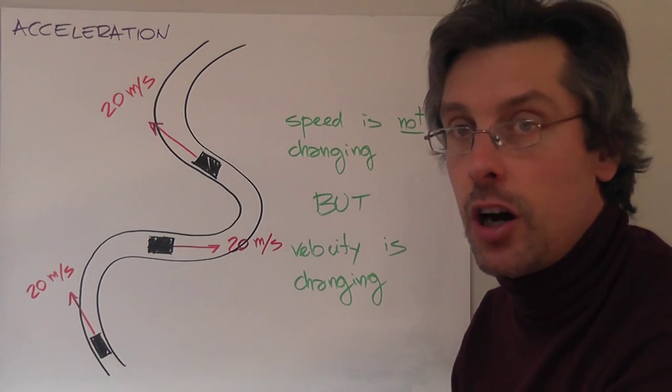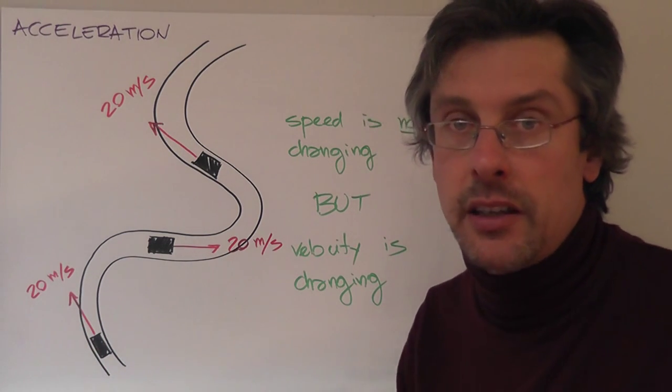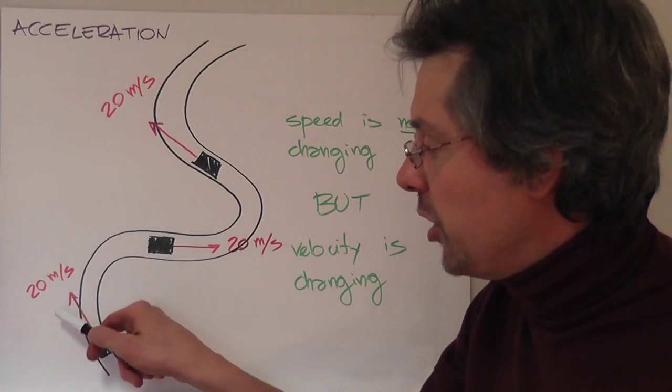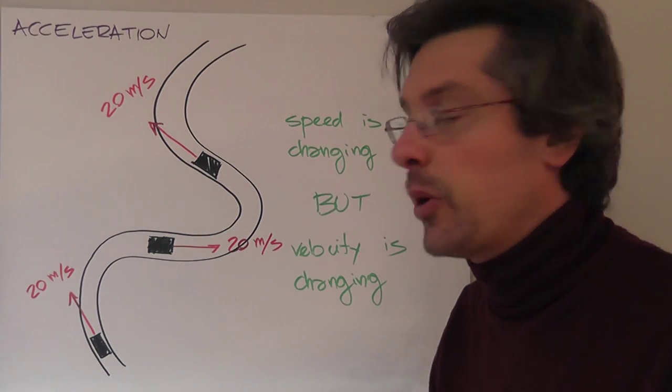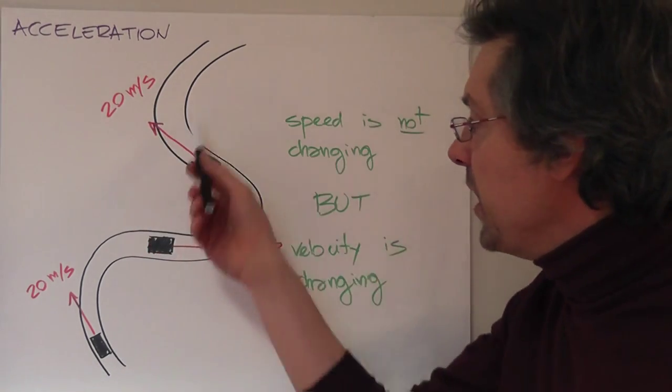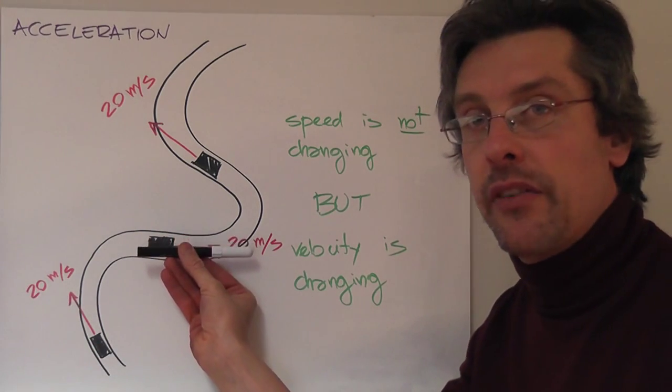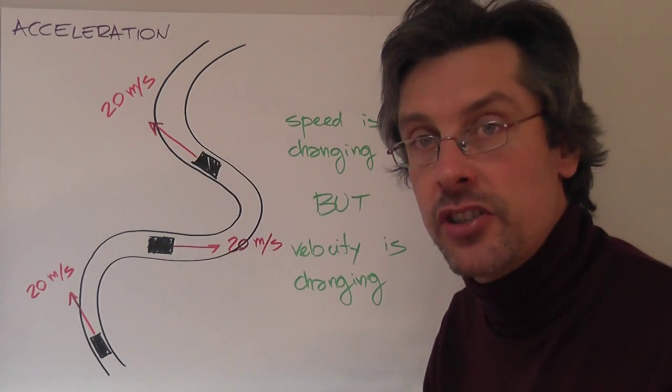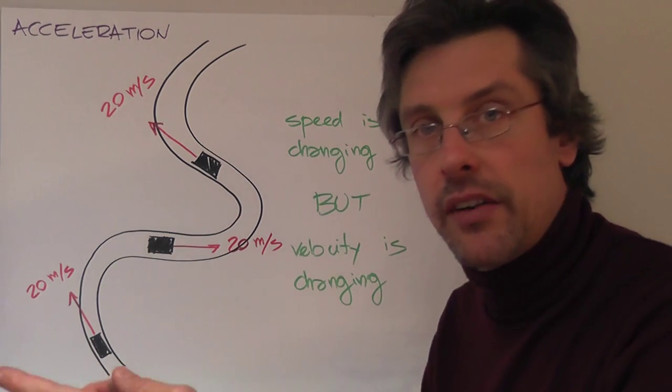So if you look at the speedometer of your car, you're still going at the same speed. Here I'm using meters per second. On your speedometer I assume you'll have kilometers per hour, but the meaning is the same. So here you have a speed of 20 meters per second. Here you have again a speed of 20 meters per second. And again here we have a speed of 20 meters per second. So the speed is not changing. But here you have this direction. Here you have this direction. And here you have this direction. And since direction is changing, velocity is changing. And when you have a change of velocity, you have an acceleration.